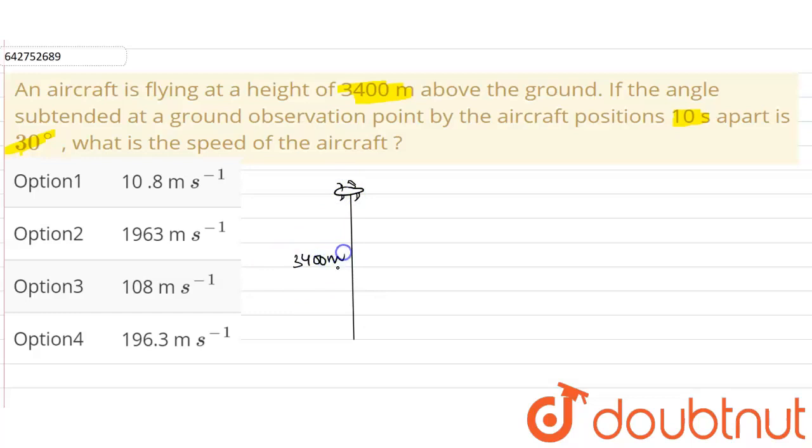The observation point, let us suppose it as A, and the angle after 10 seconds is 30 degrees observed by the observer.